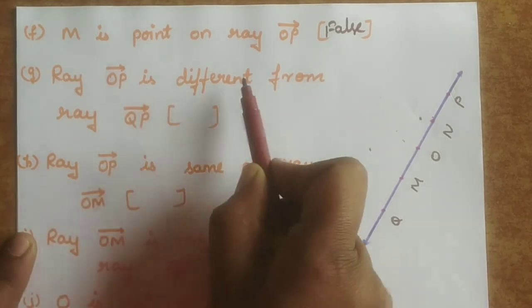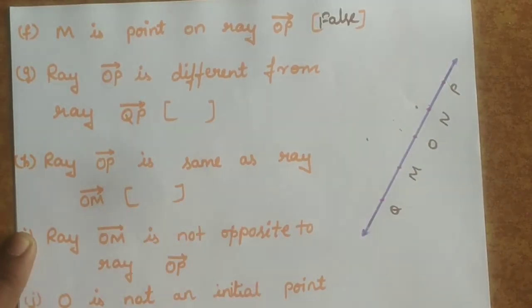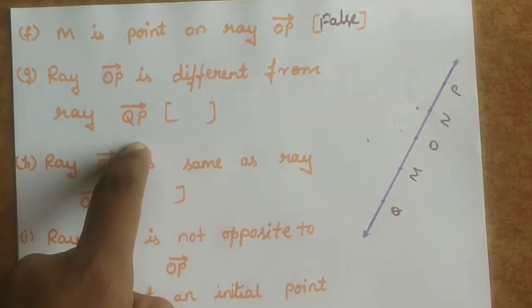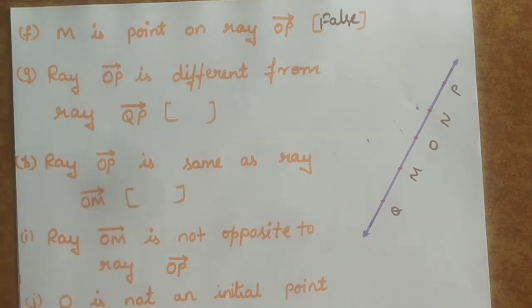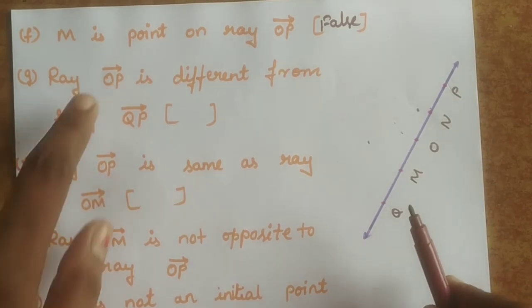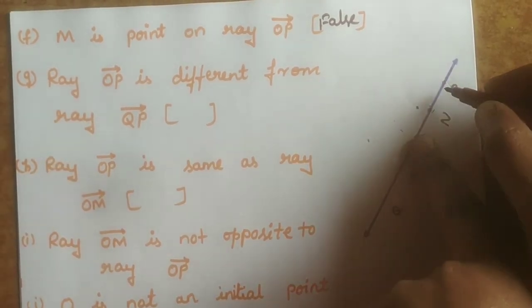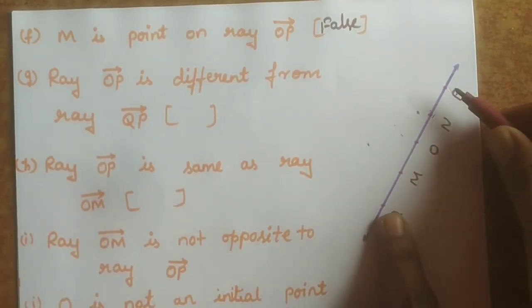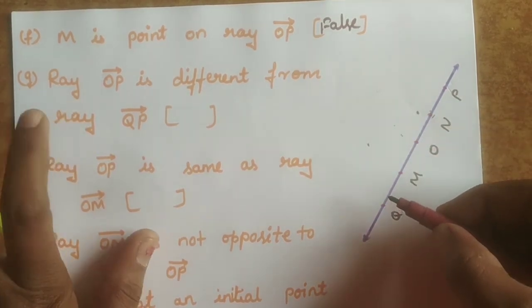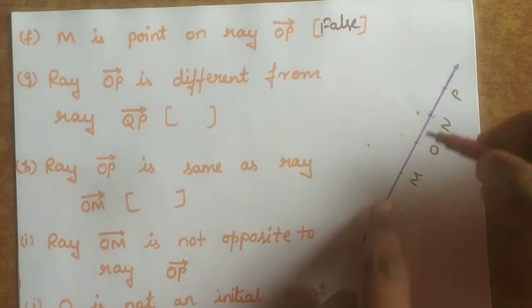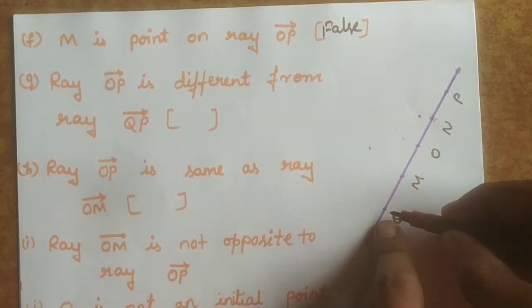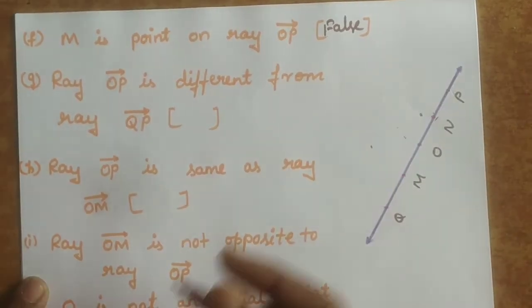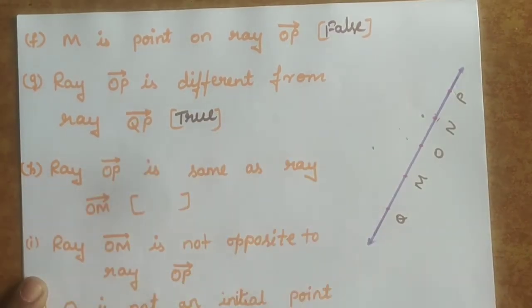Statement F: M is a point on ray OP. The points on ray OP are O and P, so M cannot be a point on ray OP — this statement is false. Statement G: ray OP is different from ray QP. OP is one ray and QP is a different ray with different end points, so this statement is true.